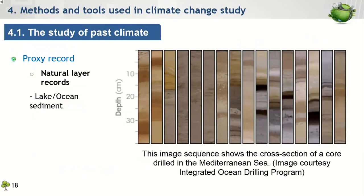Similar to tree rings, sedimentary layers also allow us to study past climate in many ways. For example, sea sediment can reveal how much ice existed in the world, providing hints about past temperature and weather patterns. Furthermore, because sediment is made up of mineral grains from the continent, ocean deposits can also tell us about ocean currents. The distribution of mineral grains in ocean sediment can reveal how strong the currents were, where they flowed from, and whether the ocean water was warm or cold. Although ocean sediment cores cannot tell us year-to-year climate information, they give us valuable information for tracking climate conditions over most parts of the Earth.